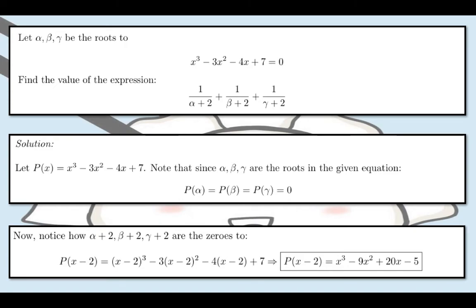Let's dive in with the solution. Suppose we have P(x) = x³ - 3x² - 4x + 7. Note that since α, β, and γ are the roots in the given equation, we are going to have P(α) = P(β) = P(γ) = 0. We can also call α, β, and γ the zeros of the polynomial P(x).